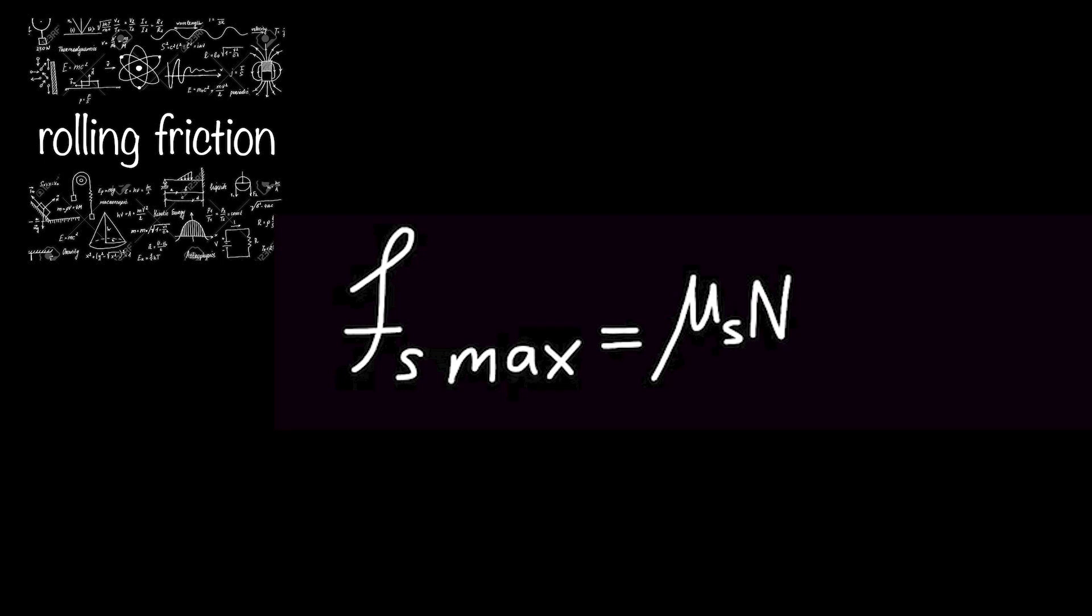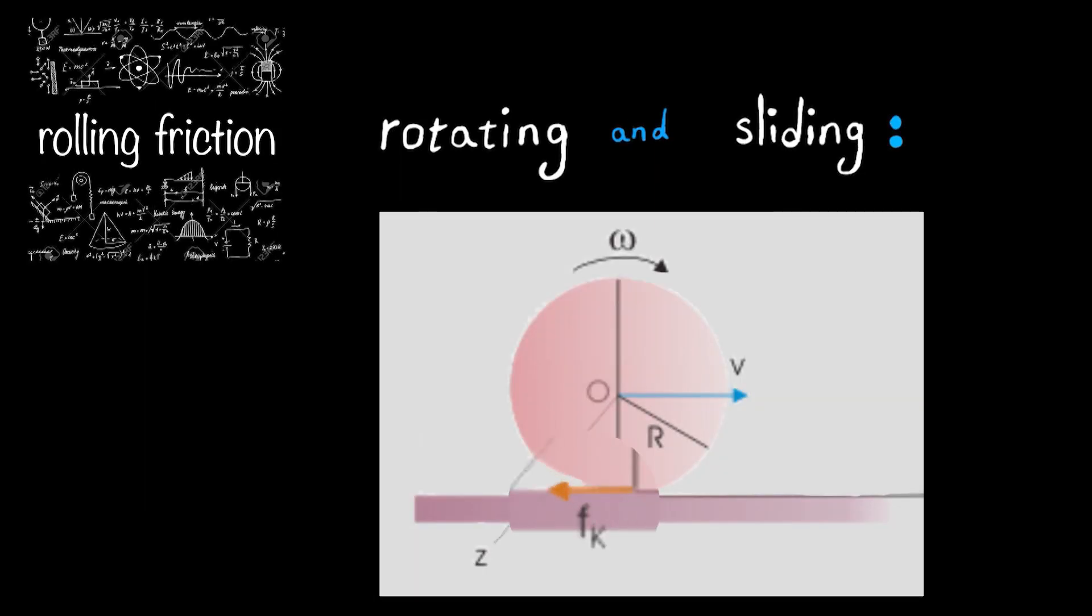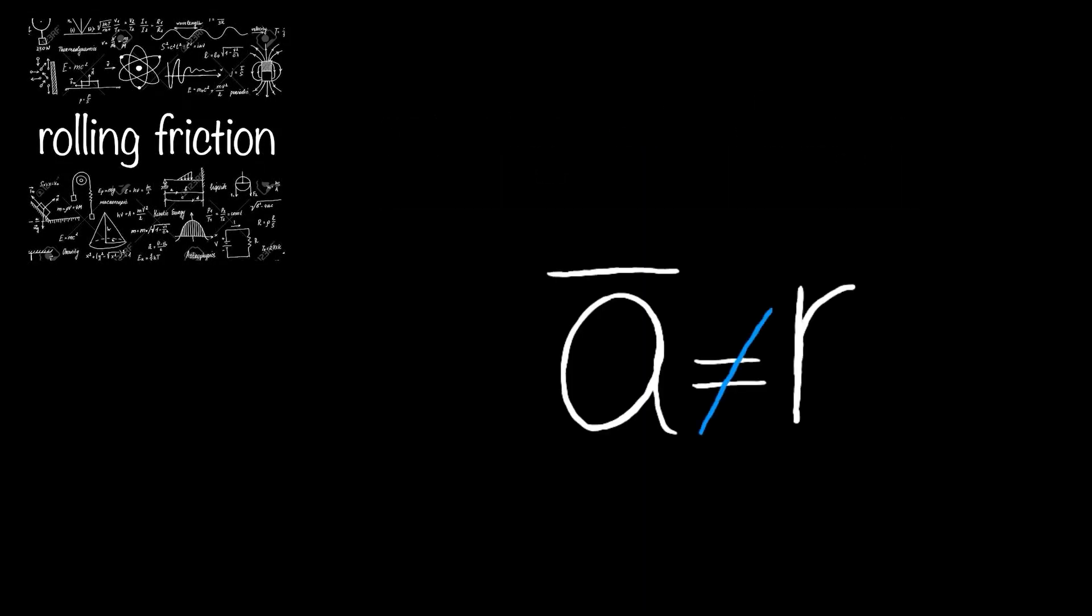On the other hand, when an object rotates and slides at the same time, kinetic friction takes place instead of FS. Furthermore, this type of motion is no longer known as pure rolling. In this case, A bar and alpha are independent.